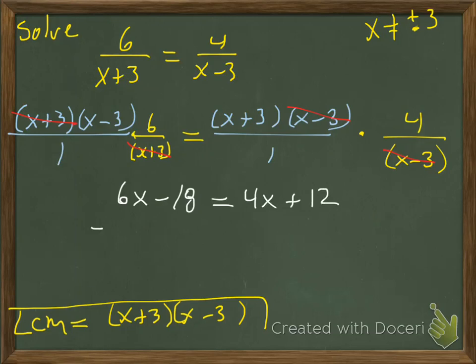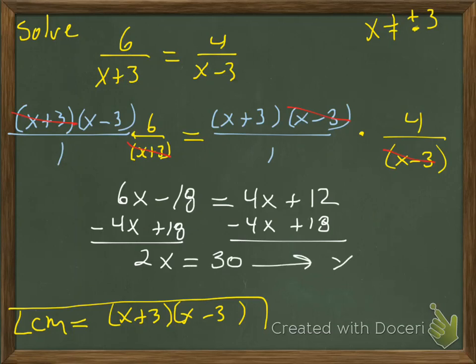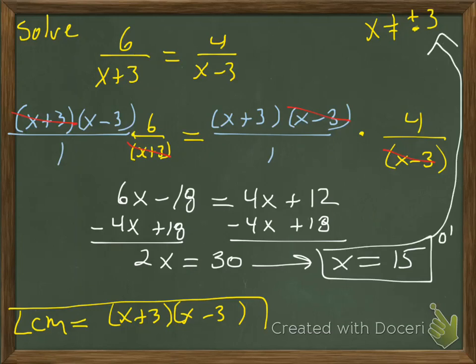This is just a regular equation you can solve. We'll move all the x's over to the left, so we'll subtract 4x. Then we'll add 18 to both sides. So we have 2x equals 30. Divide both sides by 2, and x equals 15. I checked that with my restrictions - it's not one of my bad values. We're good to go. That's my solution.